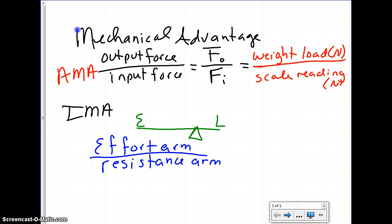You really want your number to be really big, so if you look at this fraction, you want your effort arm to be much larger than your resistance arm. In order to locate those on here, effort arm is distance from effort to fulcrum. That's your effort arm. Resistance arm is from load to fulcrum.